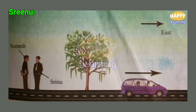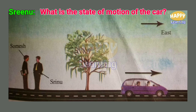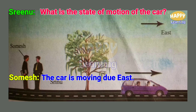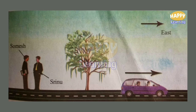Now, Srinu asked Somesh another question: what is the state of motion of the car — is it moving, and if so, in what direction? Somesh answered that it is moving due east. In the picture, one arrow represents the east direction, and the car is also moving in the same direction. So the answer given by Somesh is correct.